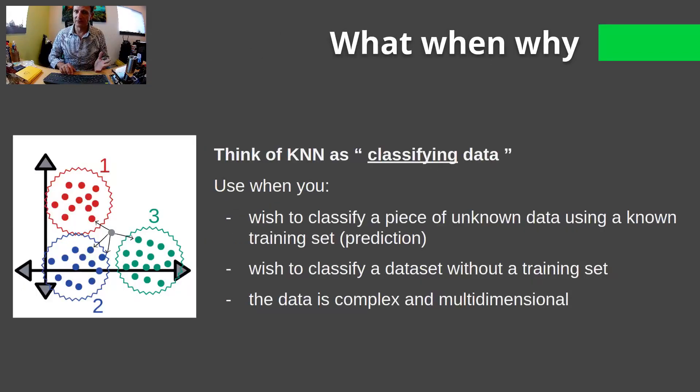So, the what, when, why. Think of KNN as a great classification scheme. You want to use this when you have unknown data that is mixed with a known data set. An example may be playing on the rock sample theme. Somebody hands me an assay. I don't know where the rocks come from, I don't know anything else about it, all I have is the assay, but let's say that I have a heap of other assays where I know an intrusion looks like this, and maybe a basalt looks like that, and I can perform KNN, and it will classify that sample as an intrusion or a basalt. Sometimes you may not even have a training set, you want to let the data set itself come up with its own internal classification scheme, KNN is good for that, and you always want to use this when the data is complex and multidimensional.